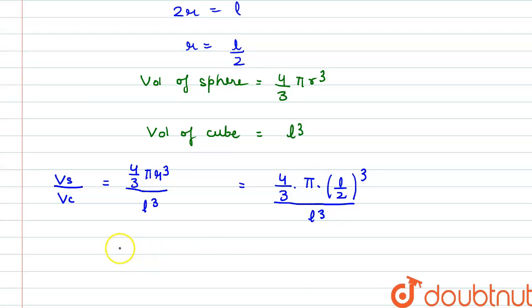So it gives us the value of Vs by Vc as 4 by 3 into pi into l cube by 8 divided by l cube. L cube gets cancelled out, so we have the value as pi by 6.